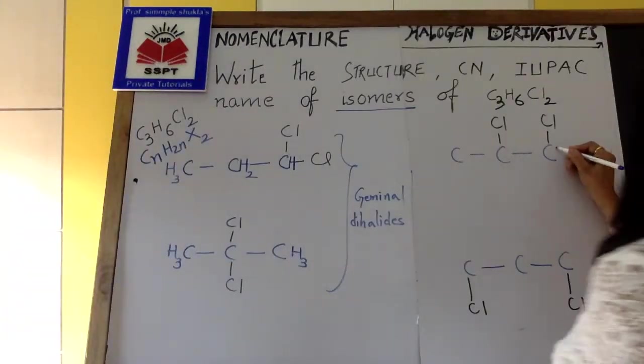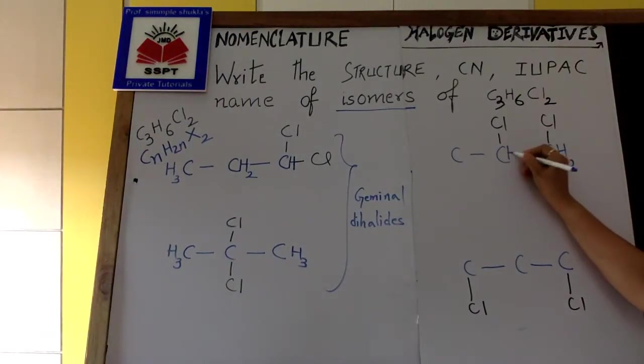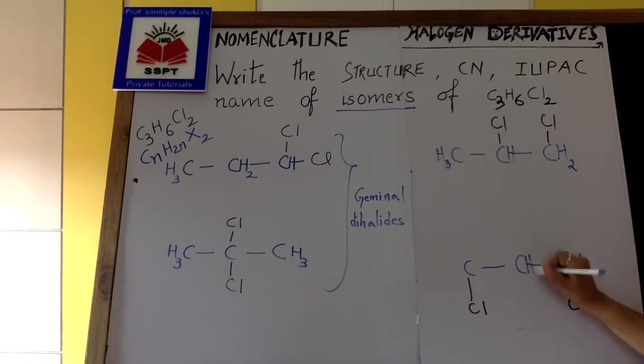So again the structure, two H over here, one over here, three over here. Two over here, one over here, now two over here and two over here. This is having two halogen on adjacent.